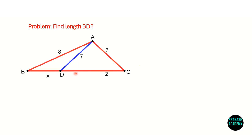Hello friends. In this problem, a triangle ABC has been given. Length AC is equal to 7 units, length AB is equal to 8 units. There is a point D on side BC such that DC is equal to 2 units and BD is equal to x units. Point D and point A have been connected so that AD is equal to 7 units. We have to find length BD, that is the value of x. I will solve this problem using construction, and I will apply congruent triangles and the Pythagoras theorem.